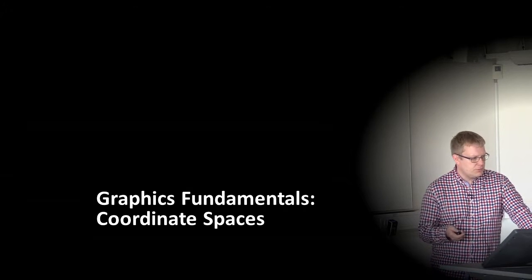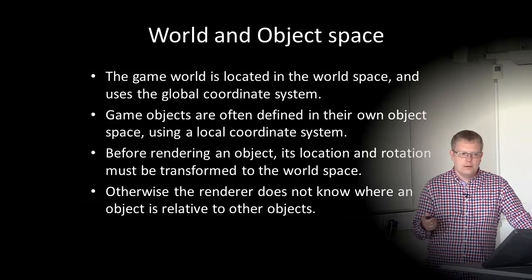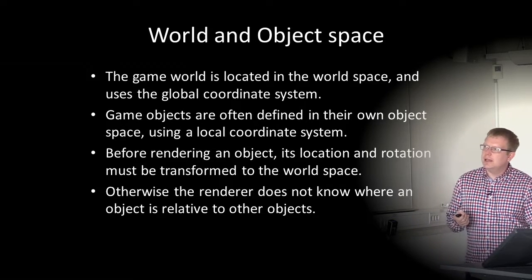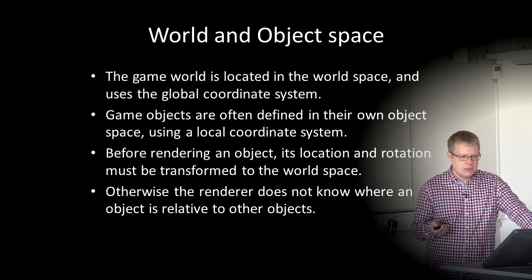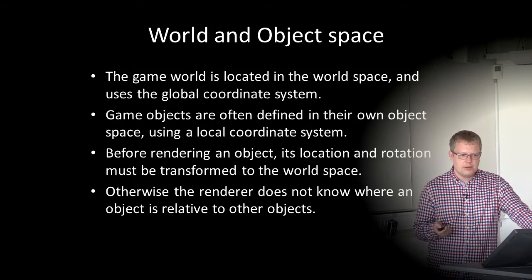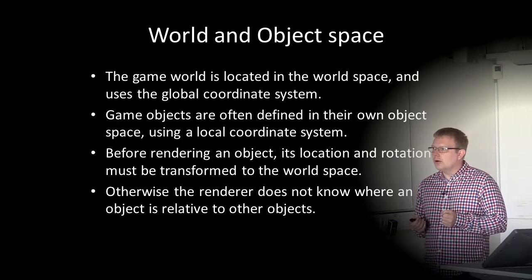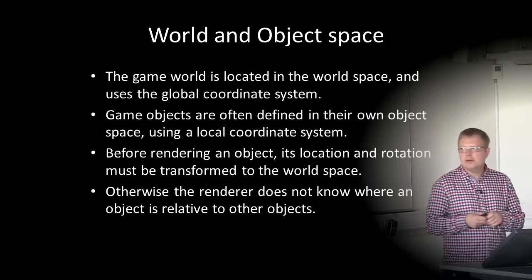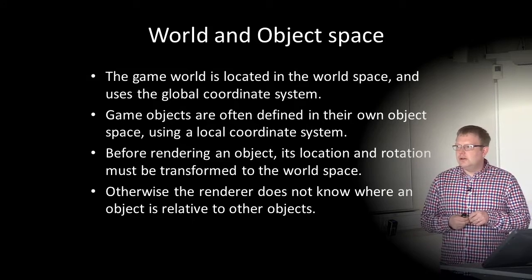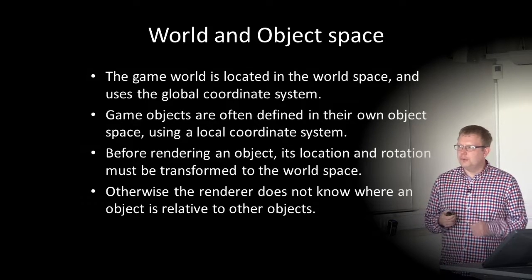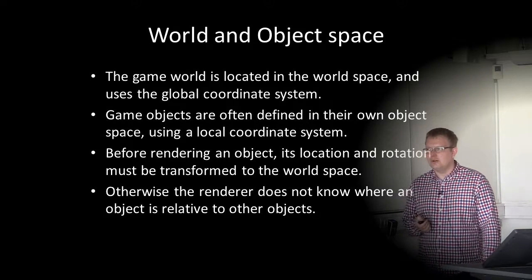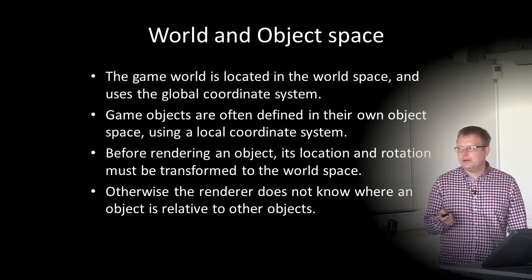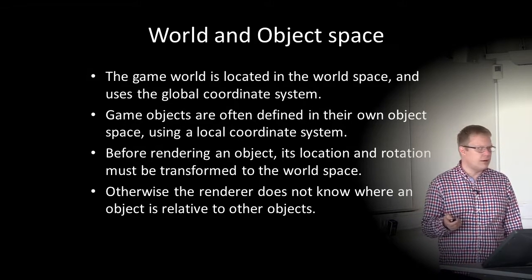Coordinate spaces — we briefly touched on this in the previous lecture. We have world space and object space: the global and local coordinate systems. The game world is located in world space using the global coordinate system, but game objects are often defined in their own object space using a local coordinate system. Before rendering an object, its location and rotation must be transformed from the local coordinate system to world space, making extensive use of matrix transformations.